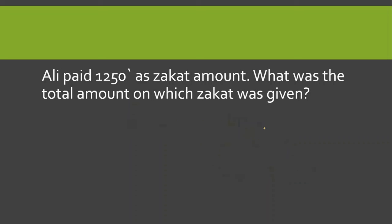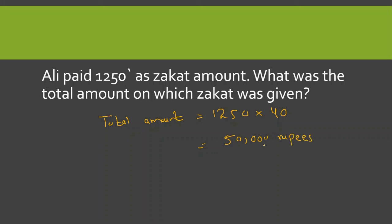دوسرا سوال: Ali paid 1250 as Zakat amount — what was the total amount on which Zakat was paid? Again total amount find کرنے کے لئے multiply by 40 کرتے ہیں۔ تو 1250 کو 40 سے multiply کر دیا — تو answer آ جائے گا fifty thousand روپیز۔ یعنی علی کے پاس 50,000 روپیز تھے جس پہ اس نے 1250 کا Zakat دے دیا۔